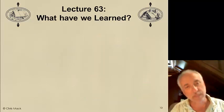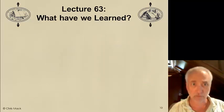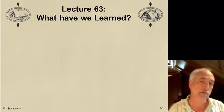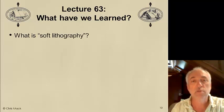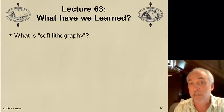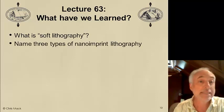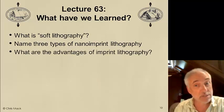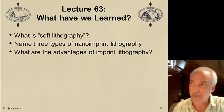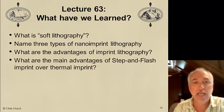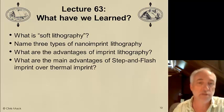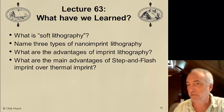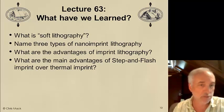We've gone through a very brief introduction into what is a very rich field of study — imprint lithography — with lots of variations that I haven't even begun to cover. Let's look at what we've learned so far. You should be able to quickly and easily answer all of these questions: What is soft lithography? Name three types of nano-imprint lithography. What are the advantages of imprint lithography? And finally, what are the main advantages of the step-and-flash approach over the thermal imprint approach for certain applications? Next time we'll continue our discussion of imprint lithography and talk about some of the applications and commercial tools used.